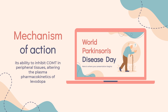When Entacopone is given in conjunction with levodopa and an aromatic amino acid decarboxylase inhibitor, such as carbidopa, plasma levels of levodopa are greater and more sustained than after administration of levodopa and an aromatic amino acid decarboxylase inhibitor alone. These more sustained plasma levels result in more constant dopaminergic stimulation in the brain, leading to a greater reduction in the manifestations of Parkinsonian syndrome.